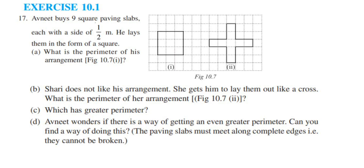Hey everyone, I'm doing exercise 10.1, 17th question. This is the last question of this exercise and this is the mensuration chapter of class 6. The question here is: Avnit buys nine square paving slabs each with a side of half meter. He lays them in the form of a square, as shown in the picture.